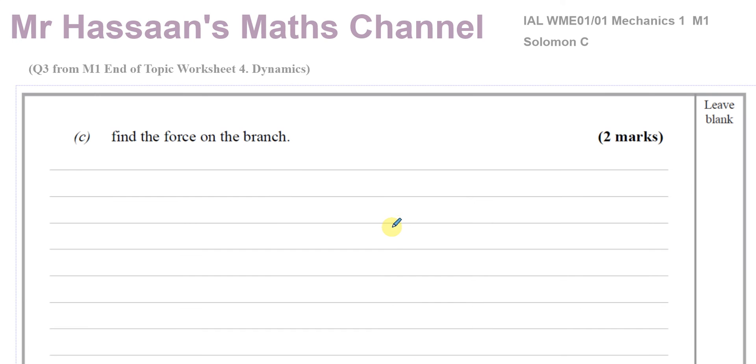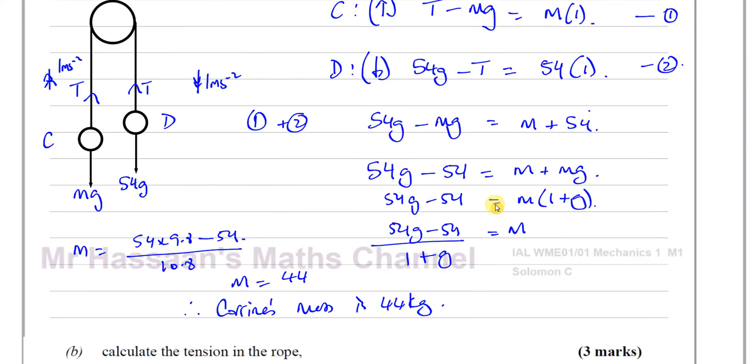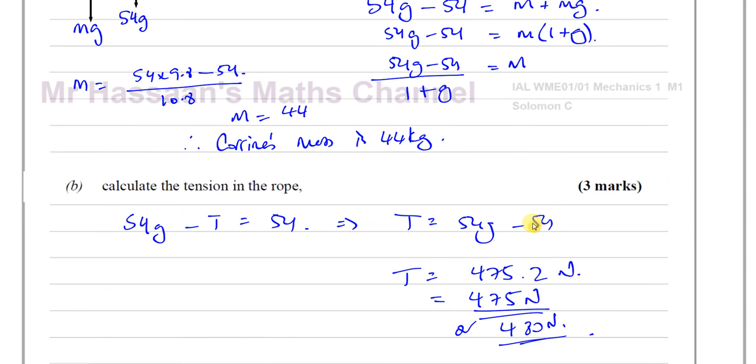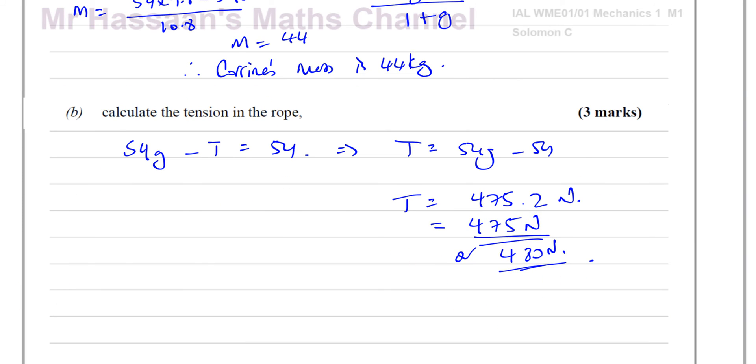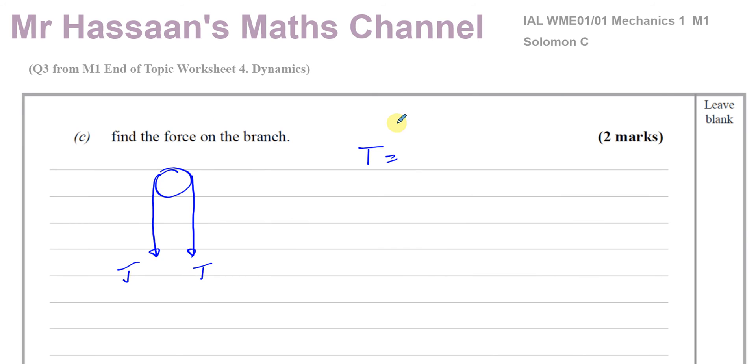There's the answer to part 6 A and B. Now for part C. It says find the force on the branch. So it's like the force on the pulley. You've got the pulley, and you've got the tension on this side and the tension on that side. And we worked out the tension in its unrounded form was 475.2 newtons.